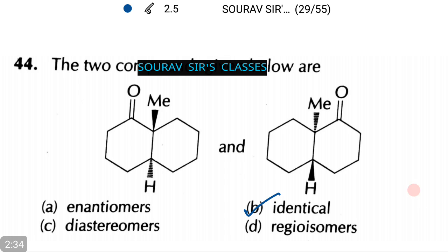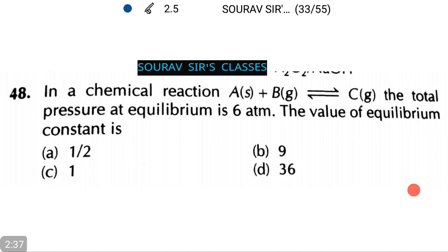Let's move on to a bit critical sum. In a chemical reaction A in solid state and B in gaseous state and the resultant C is also in a gaseous state, the total pressure at equilibrium is 6 atmospheric pressure. The value of equilibrium constant is among the following options.